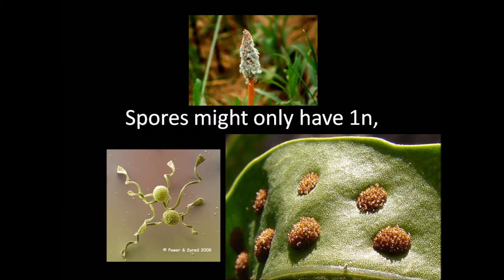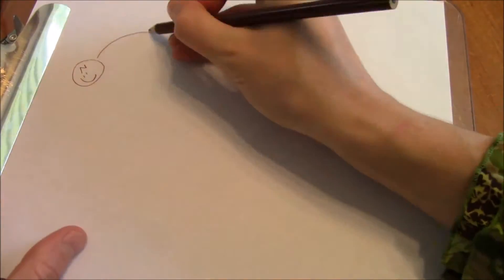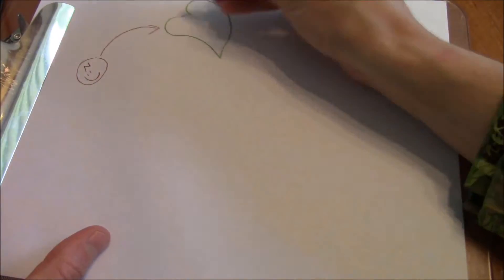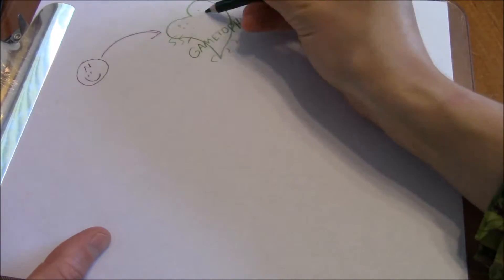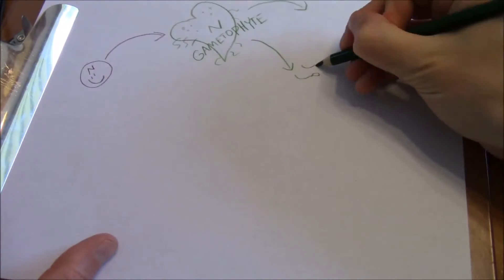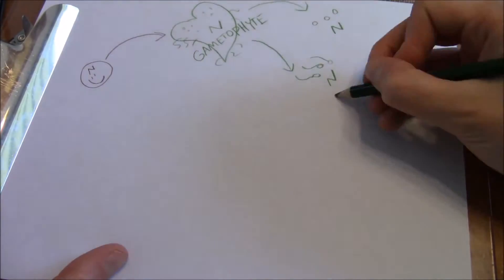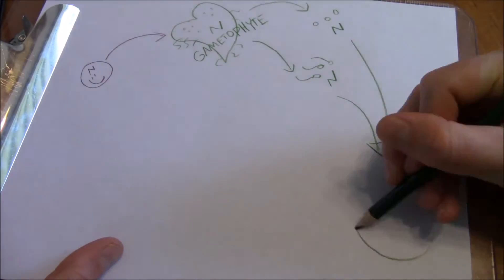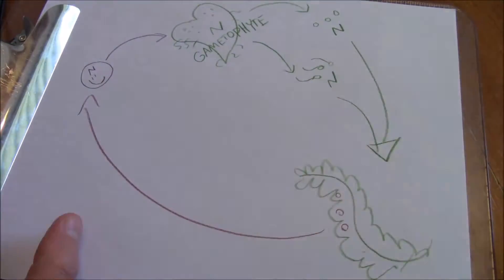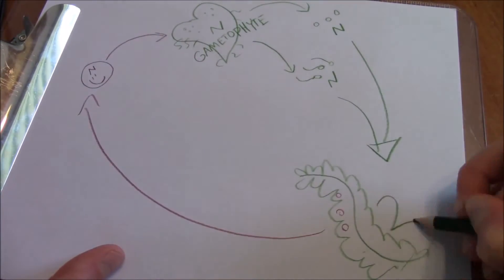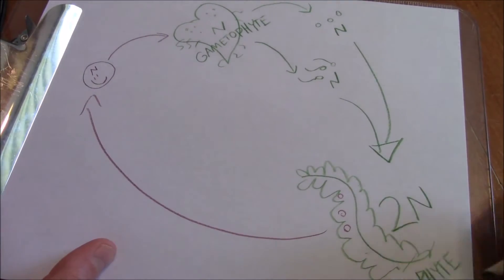Spores may only have one in, but each chromosome's focused. Cause spores will grow gametophytes, which make gametes left and right. Though they're haploid, still they might join together just to find this sporophyte song.